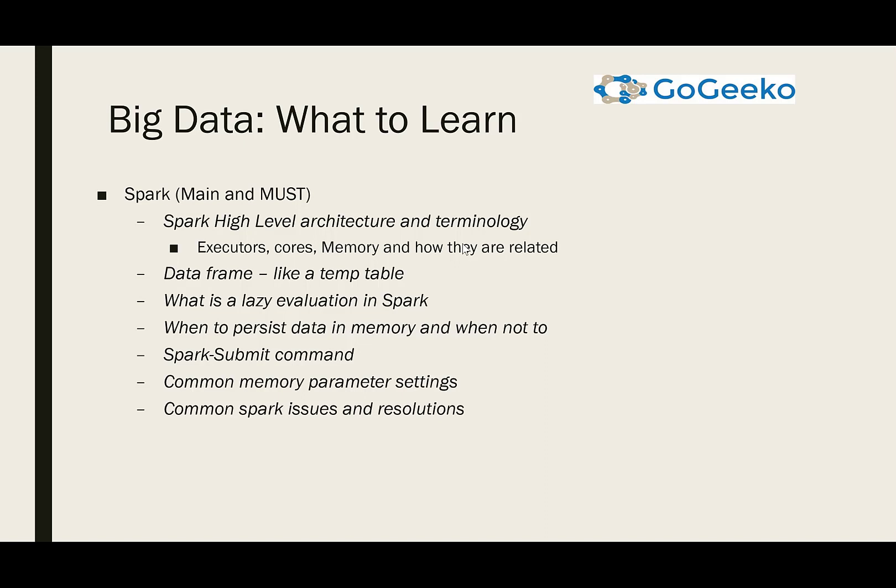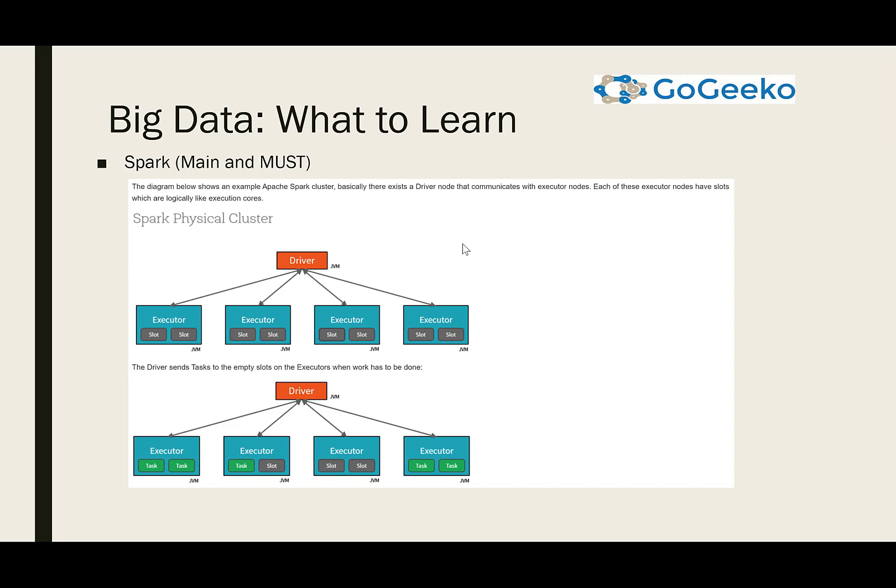You should know what lazy evaluation in Spark is, when to persist data in memory and when not to. Spark is really good with memory, but it can also cause a lot of memory issues. You should know the spark-submit command — that's how you run a Spark job — as well as common memory parameters and settings, and common Spark issues and resolutions. Here's a simple diagram: there is a driver machine that creates many executors to run your job in parallel. Under executors you have empty slots; as work is allocated, those slots are filled with tasks executed by the executor. Every executor has its own memory and cores, which play a huge role in Spark processing.